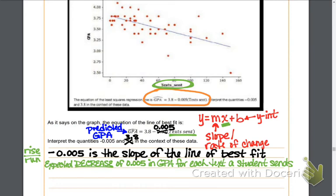So if the predicted decrease in the GPA is 0.005 for each text message a student sends, how much would you expect their GPA to decrease by if they sent 10 texts? What about if they sent an extra 20 texts? How much would you expect the GPA to go down for a student who sent an extra 100 texts?